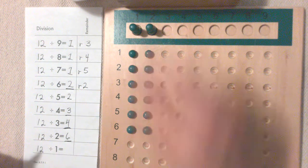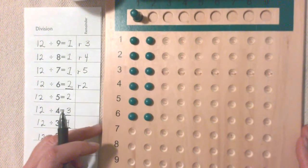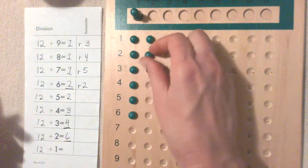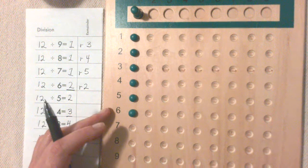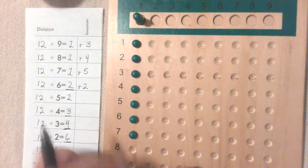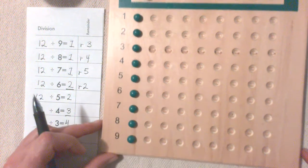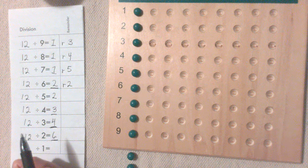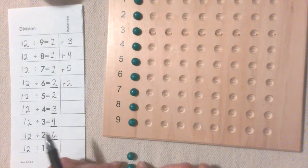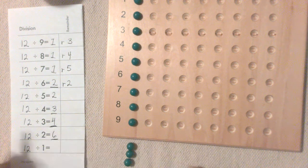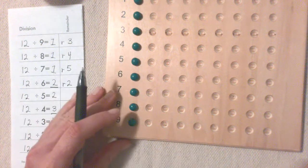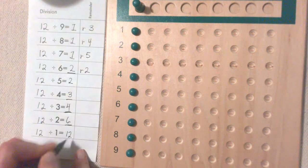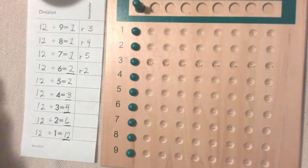12 divided by 1. And in this case, there's no more room on the division board. But we can see that all the beads go to this one Skittle. So 12 divided by 1 equals 12 with no remainders.